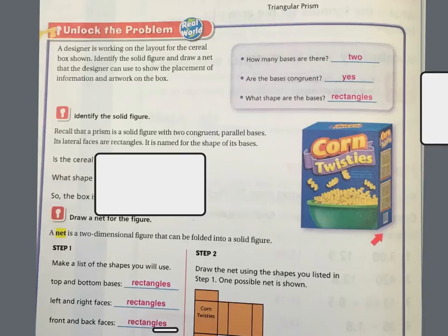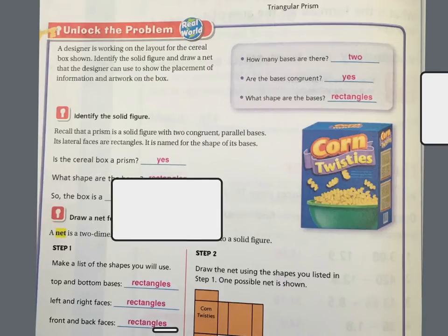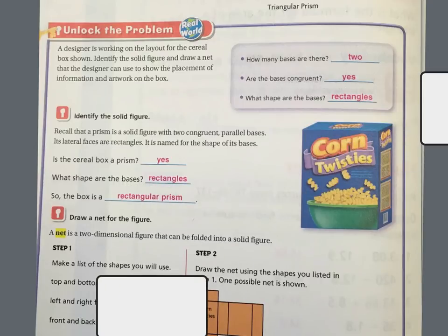Let's recall that a prism is a solid figure with two congruent parallel bases. Its lateral faces are rectangles, and it's named for the shape of its bases. So here's my base, and they're rectangles, so it is a rectangular prism. So is the cereal box a prism? Yes. What shape are the bases? They are rectangles. So the box is a rectangular prism.